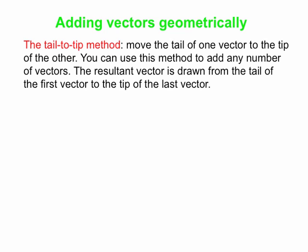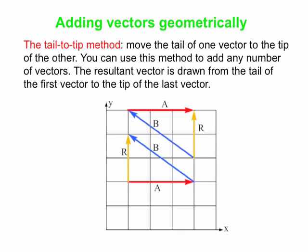The method we're going to use is called the tail-to-tip method. You take one vector and put it down, then take your second vector and move its tail to the tip of the first vector — the tip is where the arrowhead is. You can do this for as many vectors as you want. Then you draw the resultant vector always from the tail of the very first vector to the tip of the last vector.